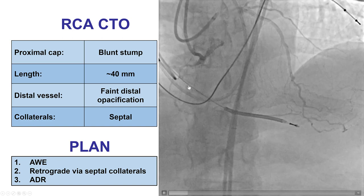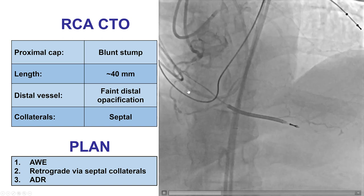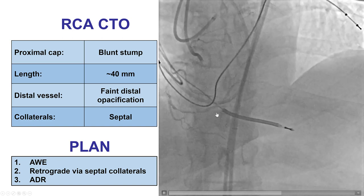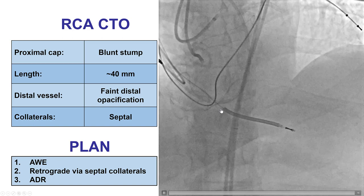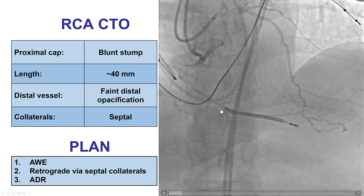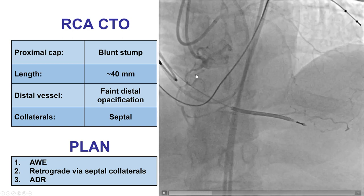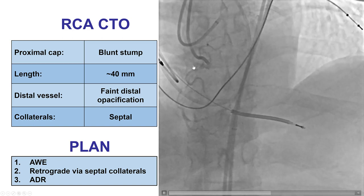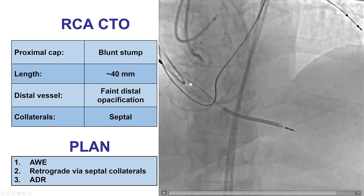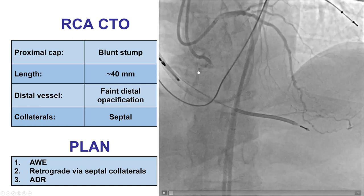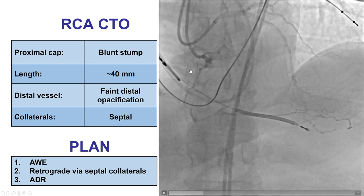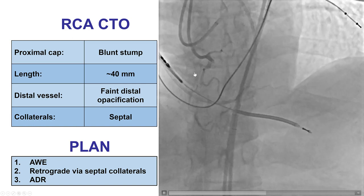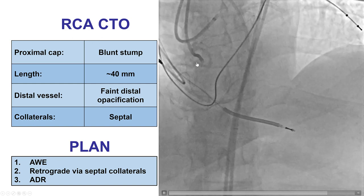The length is approximately 40 mm. The distal vessel was filling through septal collaterals. Based on this, the plan was to first try to resolve the proximal CAP ambiguity through coregistration and possibly using IVUS into the marginal branch.